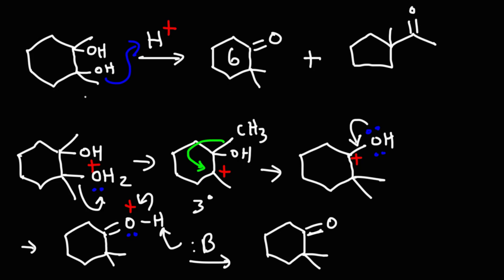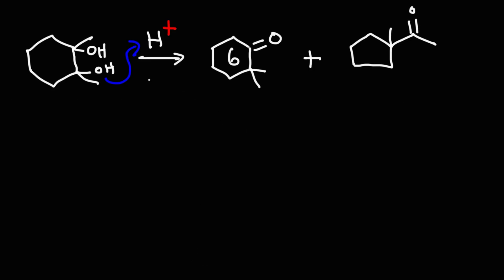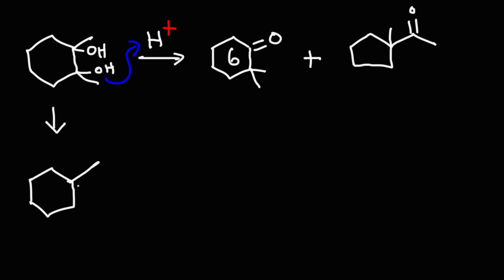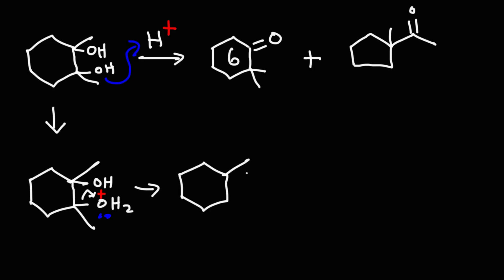Now let's propose a mechanism for the conversion of this reactant into the second product. The first step is not going to change — we're going to protonate the hydroxy group with H⁺ just like before. The leaving group is going to leave and we're going to get a tertiary carbocation. Now this is the part where we have to be careful, because the kind of rearrangement that we're going to get will determine what kind of product will be at the end.